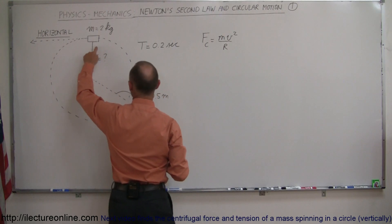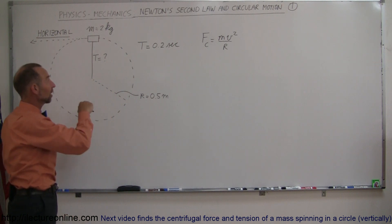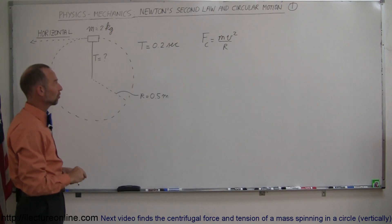We have the mass, we have the radius, we do not have the velocity. So now we have to figure out the velocity of this thing, realizing that every 0.2 seconds it makes 1 revolution or 5 revolutions per second.